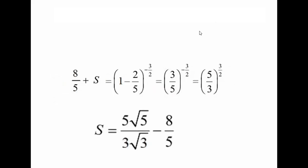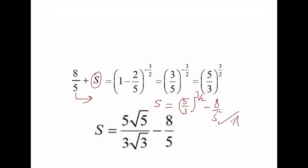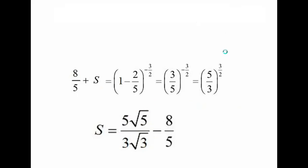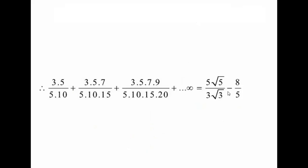So the value of 1 + S equals (5/3)^(3/2). Therefore S equals (5/3)^(3/2) minus 8/5. The final answer is S = (5/3)^(3/2) − 8/5.